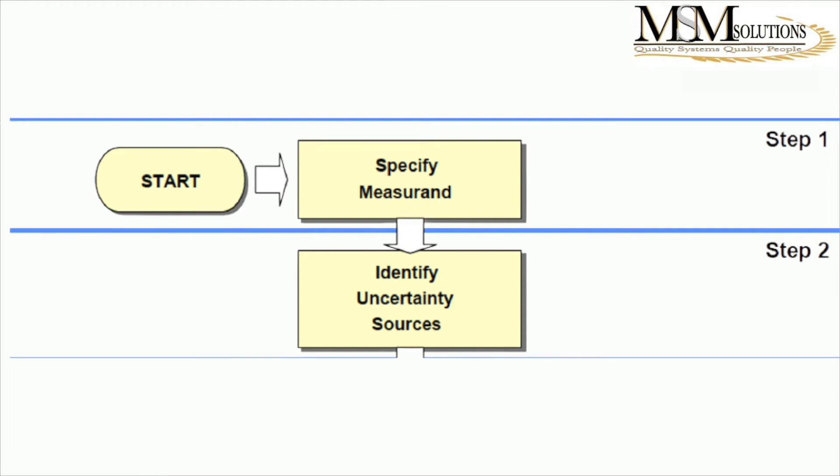Step two says, identify uncertainty sources. So what you essentially do here is you break down your process. How do I get to this final solution? What steps do I go? So you will write up your experimental steps to say step one was this. You write all of them down and you look at them and say, where are my possible sources of uncertainty?